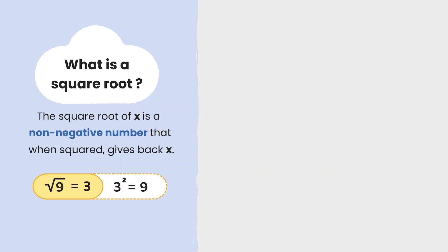There are two key points to note. First, although minus 3 squared also equals 9, the square root of 9 is only 3, not minus 3.